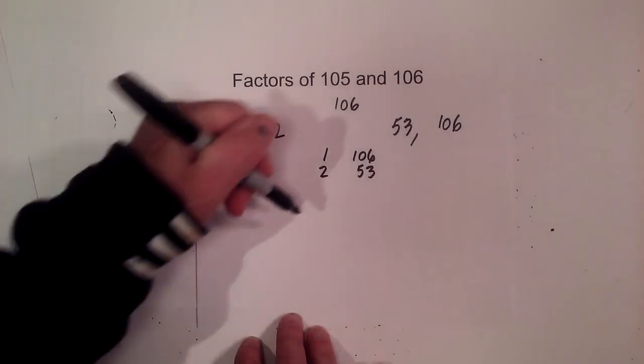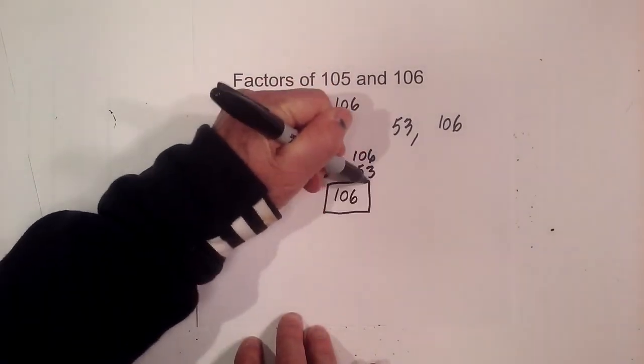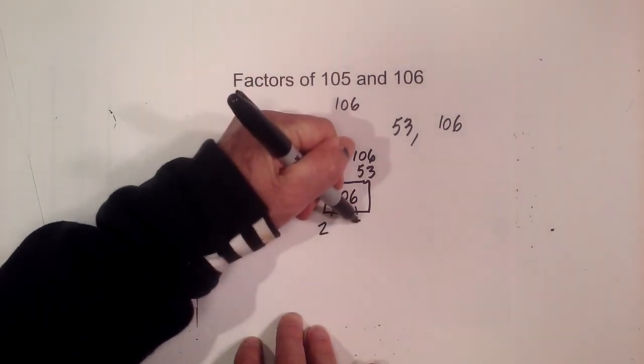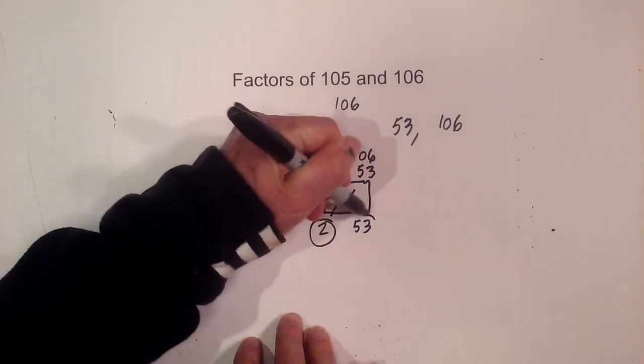Now the prime numbers of 106, you can probably tell, will not take a long time. We have 2 times 53, circle both of these because they are both prime.